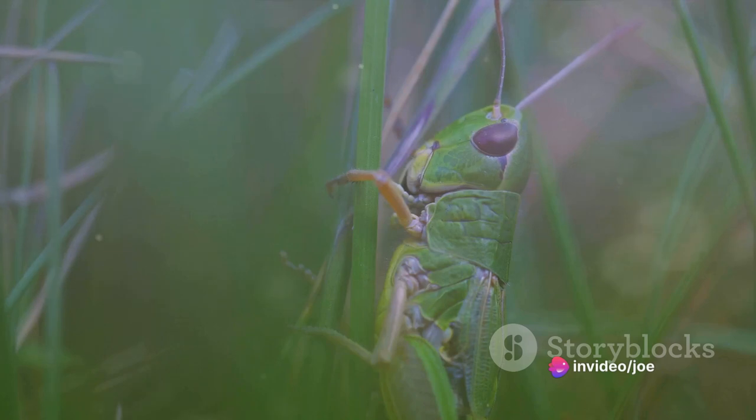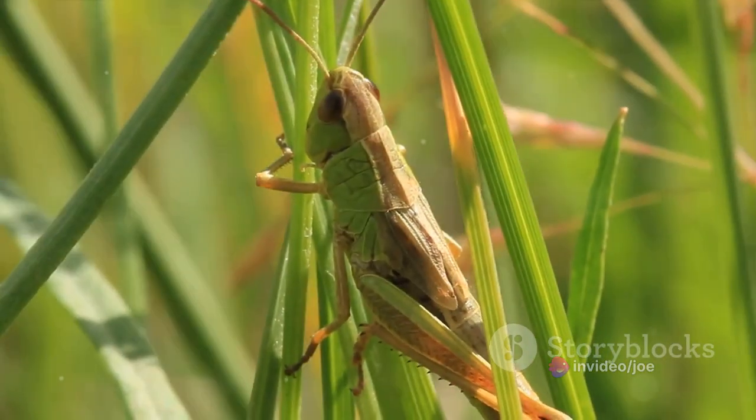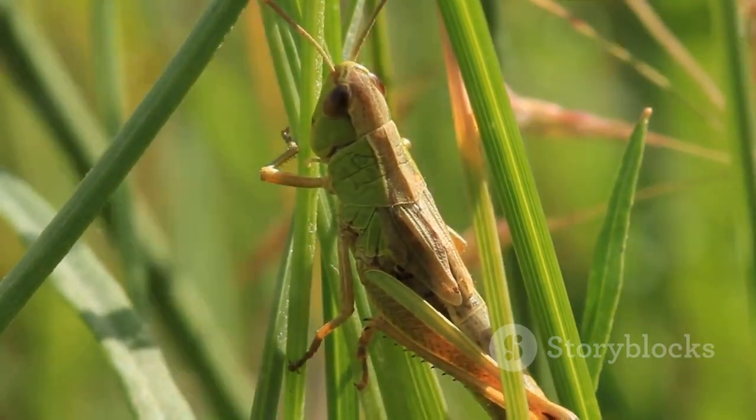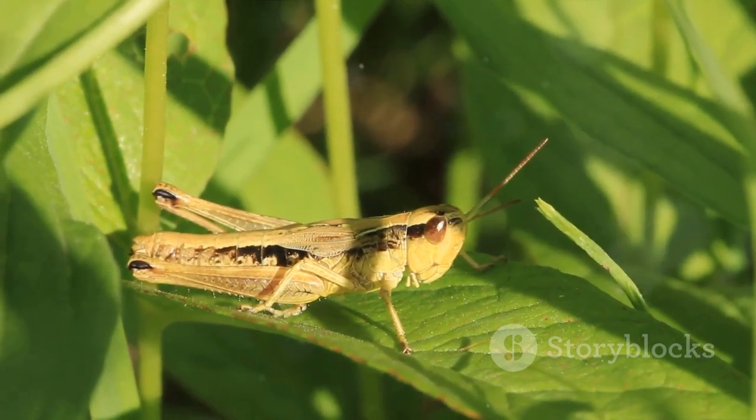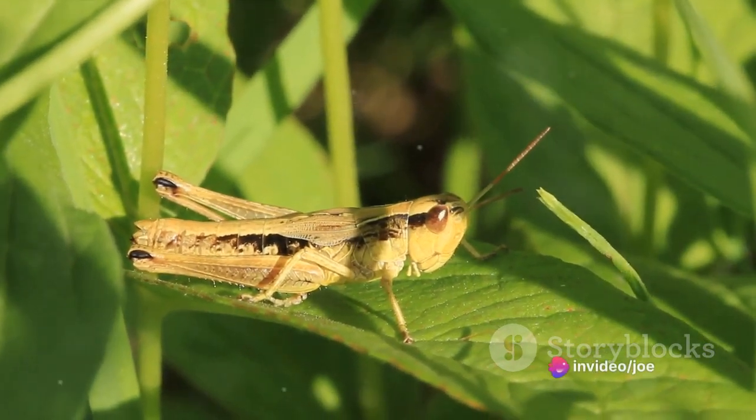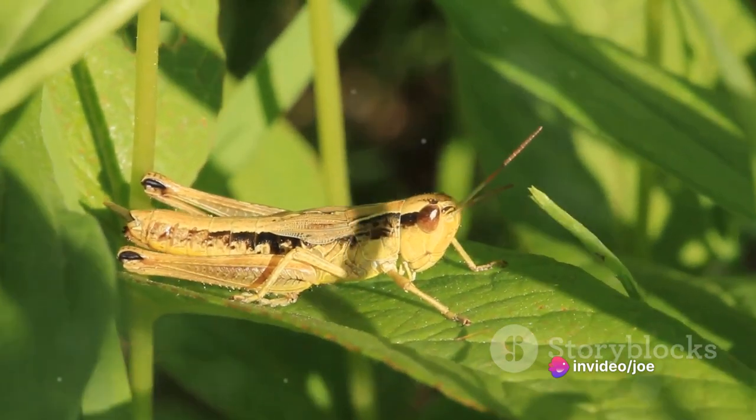But that's not all. These belly ears are also crucial in grasshopper communication, especially during courtship. Males serenade potential mates with a song created by rubbing their hind legs against their wings. The females listen, belly first, deciding whether to accept or reject the suitor. So, grasshoppers might just hear you coming belly first.